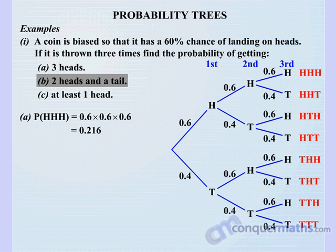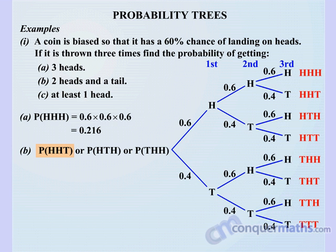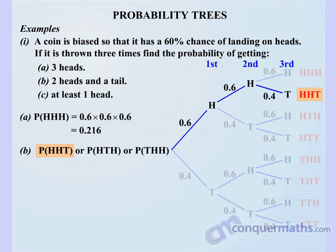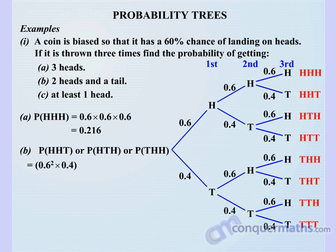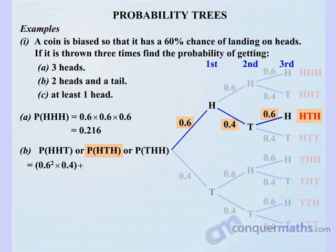Part B: probability of getting two heads and a tail. We can get two heads then a tail in that order, or head-tail-head, or tail then two heads. We need to make sure we cover all the situations possible. For the first case — heads-heads-tail — we multiply 0.6 squared by 0.4. The word OR in probability tells us to add. For head-tail-head, the branches again give us 0.6 squared times 0.4.